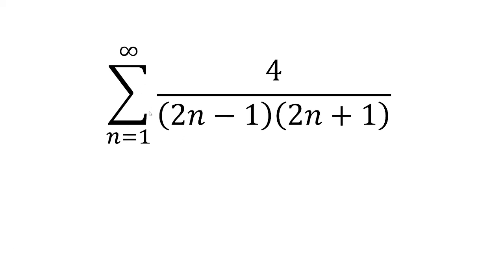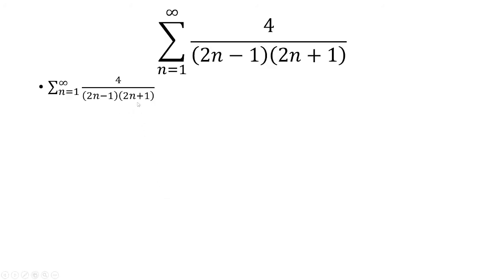In this video, we want to find the sum from n equals 1 to infinity of 4 over 2n minus 1 times 2n plus 1. We're going to break this up first into two separate fractions. We're going to use partial fraction decomposition.